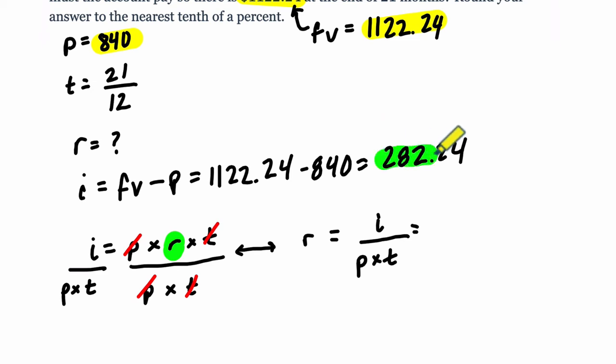We know now that the interest is 282.24. So I'm going to write that, 282.24. And we're dividing by principal times time. Principal is 840 times the time in years. I'll just write 21 over 12. I'm not going to evaluate that decimal. I'll leave it as a fraction. And now that's our rate.